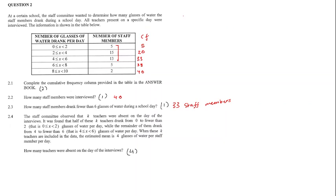So in order to do this, we can first get our original mean from our data. So we have 5 members times 1. We would then add 15 members who drank 3 glasses, 13 members who drank 5 glasses, 5 members that drank 7 glasses, and 2 members that drank 9 glasses. And we would divide this by the total being 40 members. And when we calculate that, we should get 4.2 being our mean.